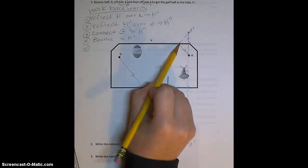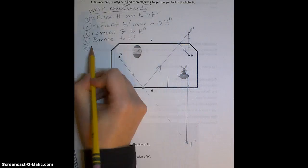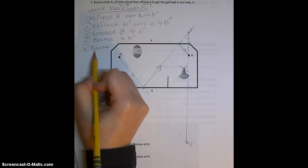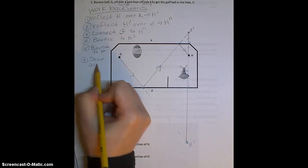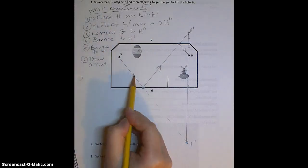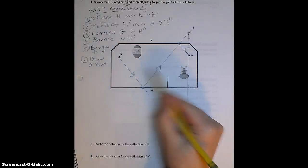And then from this point, we bounced off the wall to H. And then lastly, make sure you draw your arrows to show the path that the ball is actually traveling.